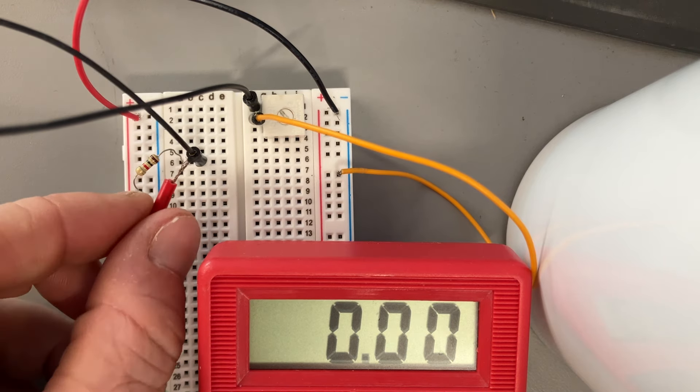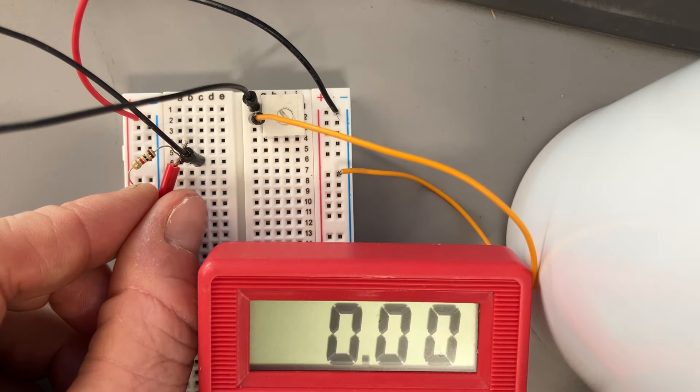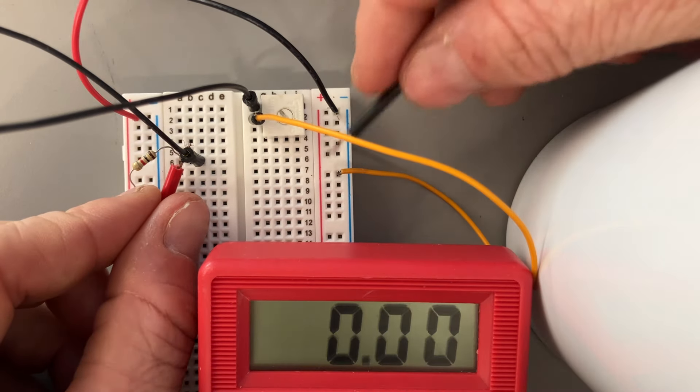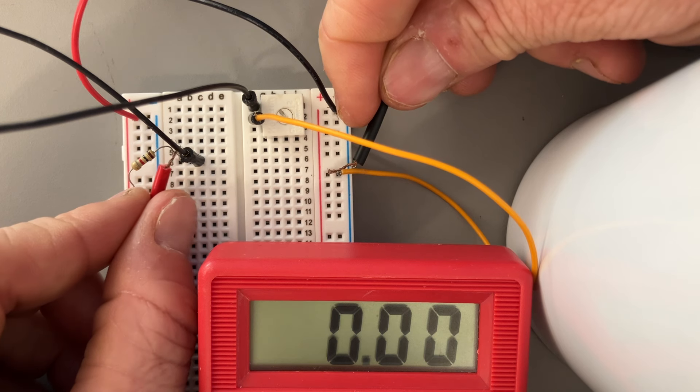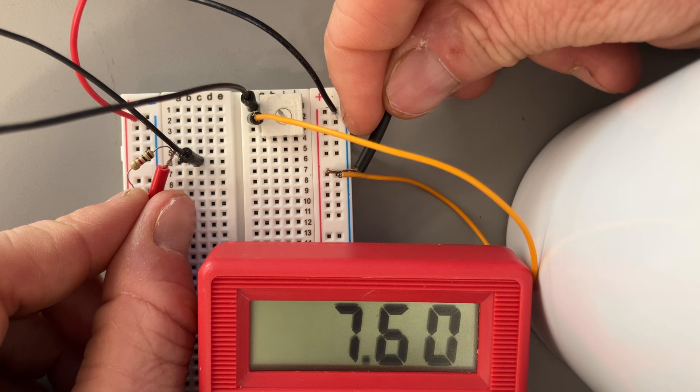So if I touch a piece of wire on the outside here and the outside right there, I'll come around this way. The outside right there, I get 7.6 volts on my potentiometer.